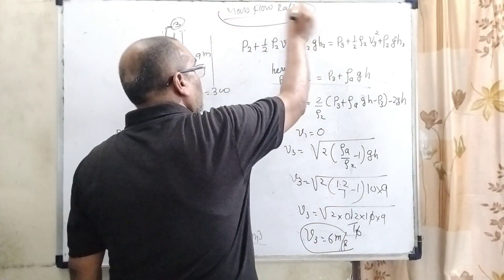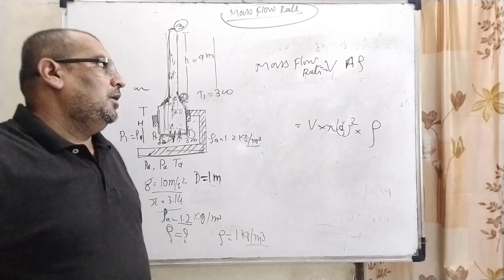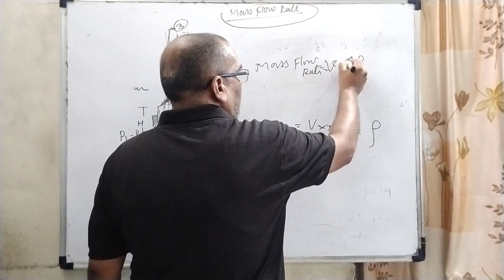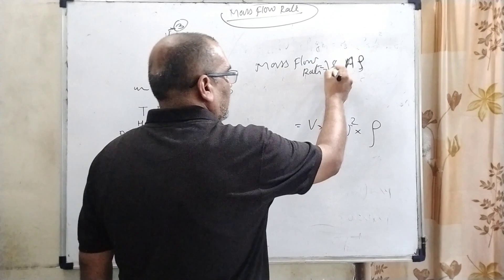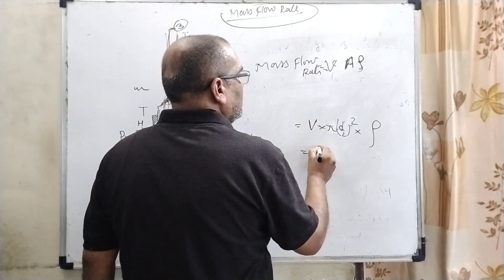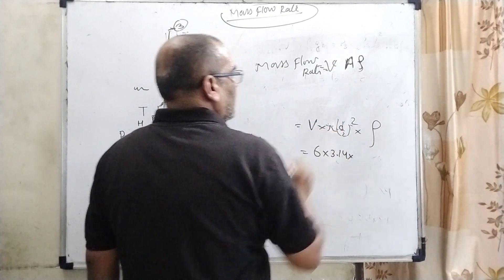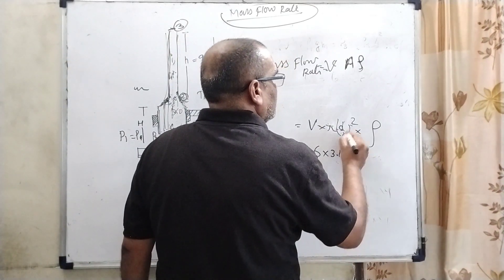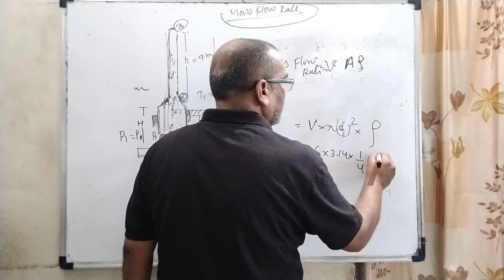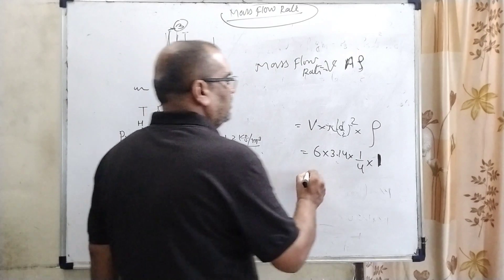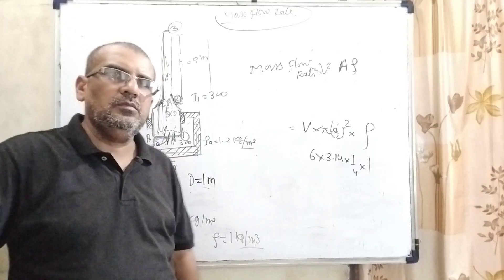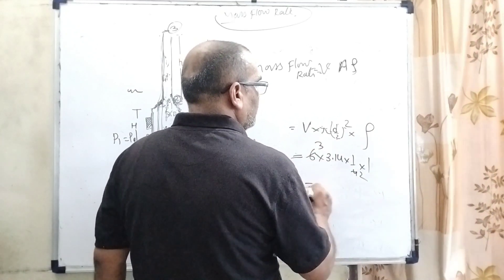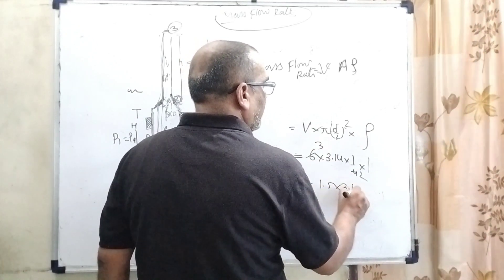Now we use mass flow rate, which equals velocity times area times density. Here velocity is 6, area is 3.14 times diameter squared over 4. The diameter of the furnace is 1, so it's 1 squared over 4, and density we already have as 1 kilogram per meter cubed.